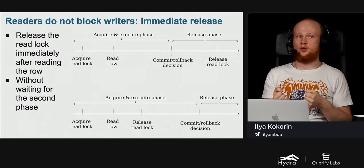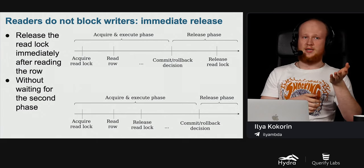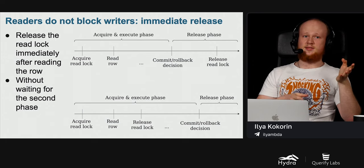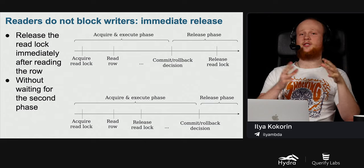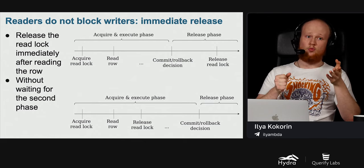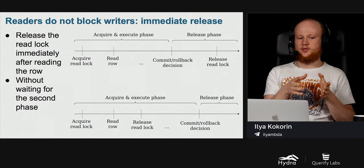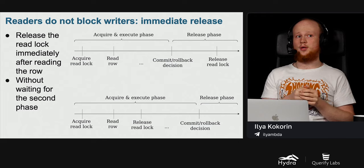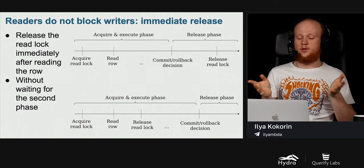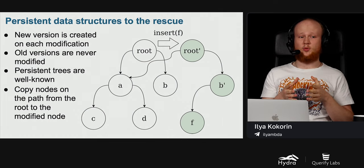Another approach is the immediate release approach: release the read lock immediately after reading the corresponding row, without waiting for the second phase of the two-phase locking protocol. Write locks are still released in the second phase. In relational databases this is known as the read uncommitted approach. But the problem is it does not guarantee consistent views. We should design solutions that will always guarantee we face only consistent views of the database.